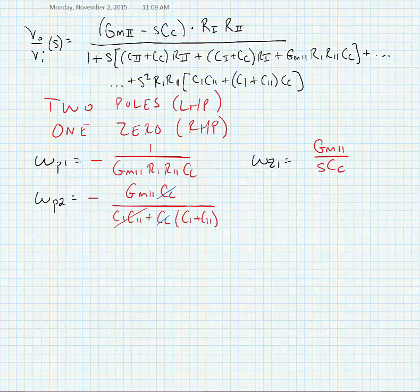Now, one other observation is that C2 is probably going to be dominated by a load capacitance, and it's probably going to be much bigger than any internal capacitance. And so we can make one approximation to omega P2. And that's to say that omega P2 is equal to minus GM2 divided by C2.